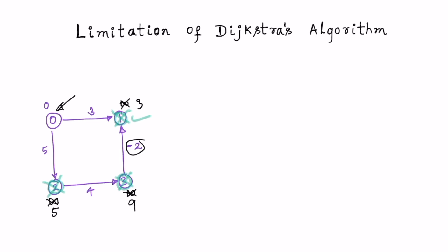We stop the algorithm here. Even though we didn't explore this path from node 0 to node 1, we still get the shortest path to node 1 which is 3, going from 0 to 1 directly.